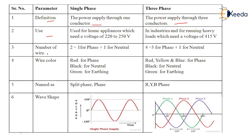The third parameter is the number of wires used. In single phase there are two wires: one for the phase, which carries the actual current and is also called the live wire, and the second is the neutral wire. Three phase has four wires: three for the phase, which are the current-carrying wires, and one wire for the neutral.